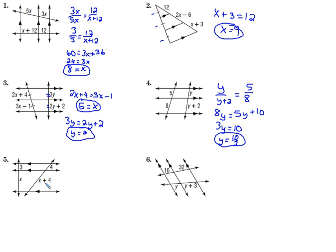Okay, for number 5, again, proportions. 3 over x. Those segments are proportional to 4 over x plus 4. Cross multiply. 4x equals 3x plus 12. Subtract 3x from both sides. x is 12.